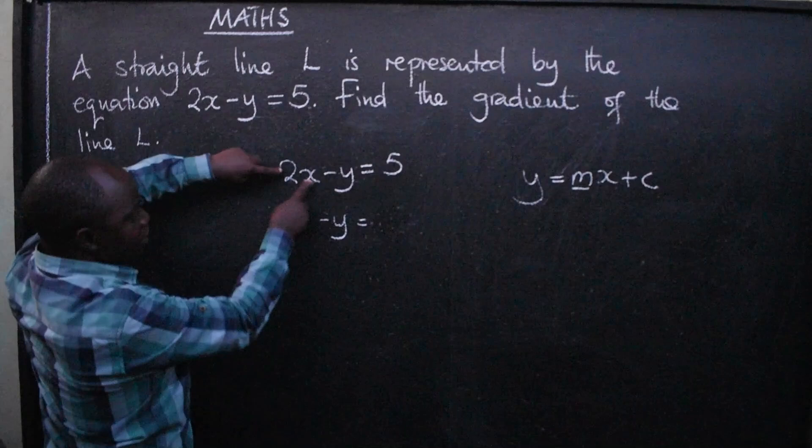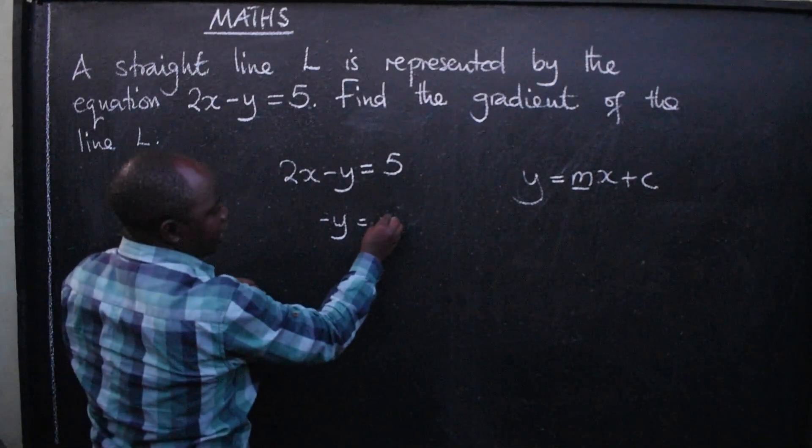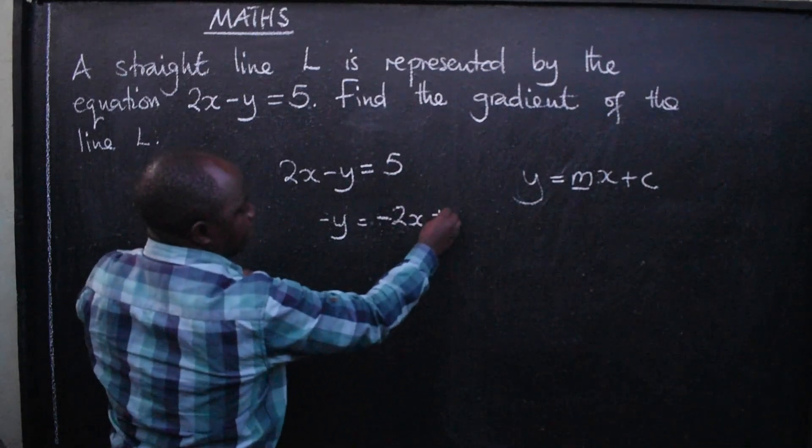We can simply say this is 2x, which is positive. When it crosses the equal sign, it becomes negative 2x. Then we have this constant, plus 5.